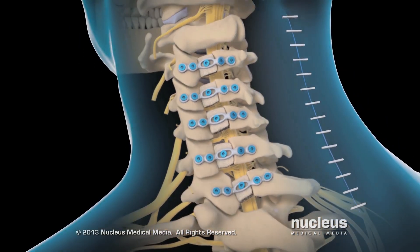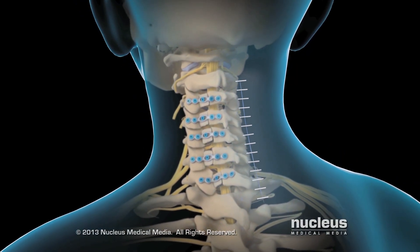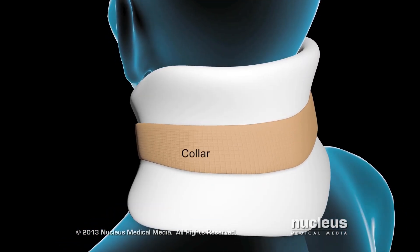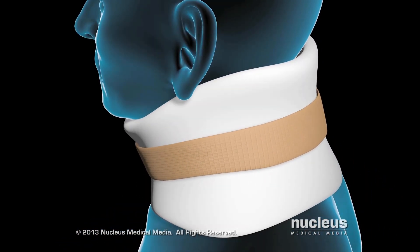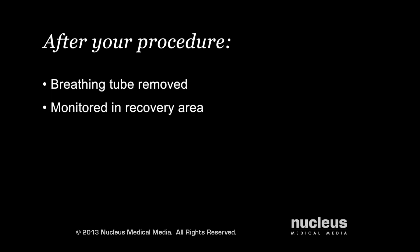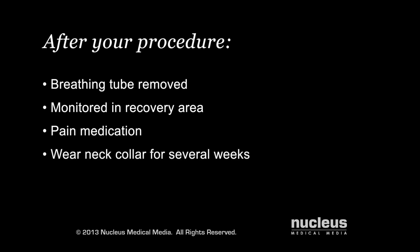Your surgeon will close your incision with sutures, surgical skin glue, or staples. Your neck will be placed in a collar to keep it still while your bones heal. After your procedure, your breathing tube will be removed, and you will be taken to the recovery area for monitoring. You'll be given pain medication as needed. You will wear your neck collar for several weeks. You may be released from the hospital within two to three days after your procedure.